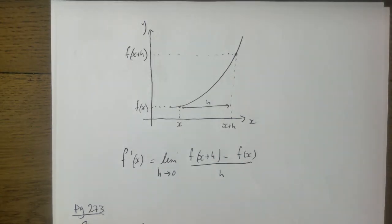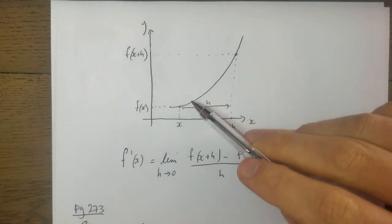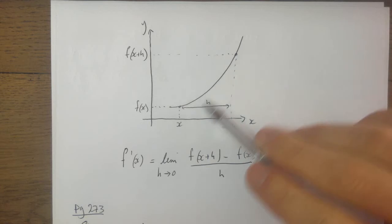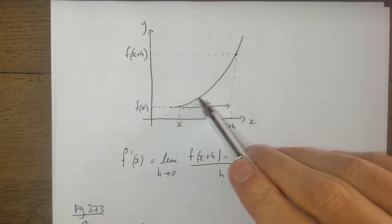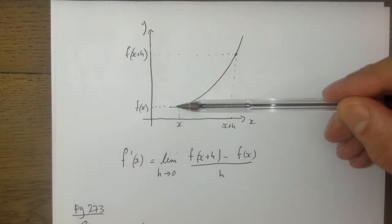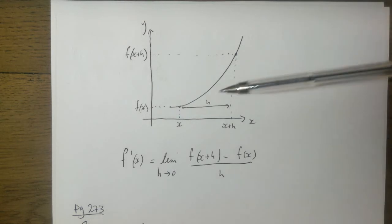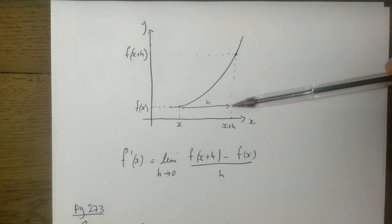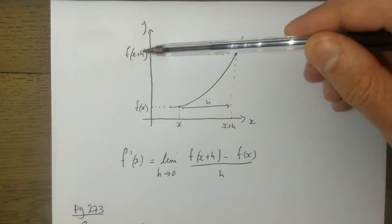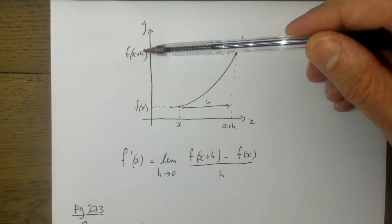We're going to do some revision of differentiation from first principles, and then we're going to go to a rule for differentiating. This is what we looked at last week - basically it's a posh expression for the slope of the curve. This is the graph, that's the actual function. If I put x in I get f of x out. If the distance from here to there is h, that's x plus h, so if I put x plus h in I get f of x plus h out.